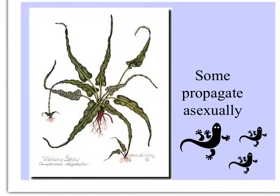A number of organisms propagate asexually. The walking fern makes little plantlets on the tips of its leaves that lower to the ground and root, and the older plant eventually dies. The new plant grows, makes babies on the tips of its leaves, and so can walk across the landscape.